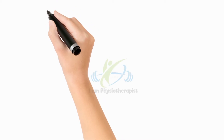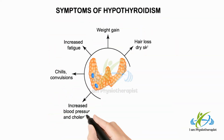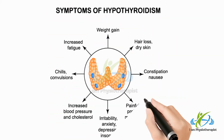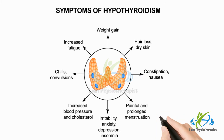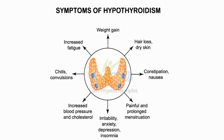Some other symptoms include weight gain, constipation, muscle aches and weakness, muscle cramps, loss of sex drive, pain, numbness and a tingling sensation in the hands and fingers, and irregular or heavy periods.